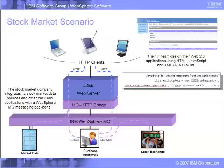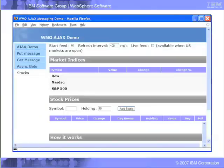Traditionally, access to WebSphere MQ would require either a WebSphere MQ server or client code. But in this case, we're offering customers the ability to use a simple web browser enabled with JavaScript. You can see the simple commands being used to access this topic — called stocks-slash-star. There are really two lines of JavaScript that enable this: the creation of a new XML HTTP request, and opening that request with a GET request using the URI MSG-topic-stocks-star. The MQ HTTP bridge maps that incoming URL to the stocks-slash-star topic on the WebSphere MQ backbone, enabling retrieval of the required messages.